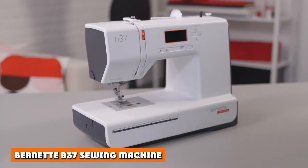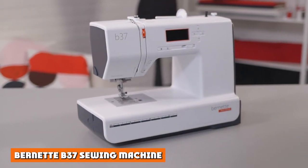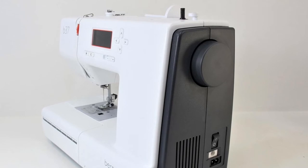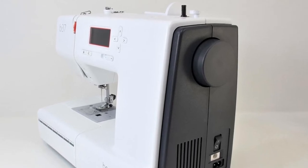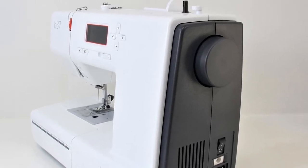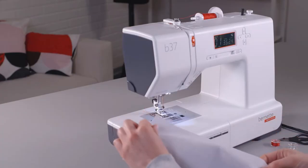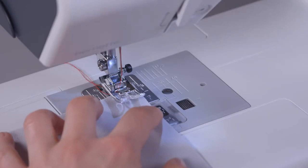The Bernett B37 sewing machine offers a basic aesthetic, but its looks can be deceiving. The exterior is almost entirely white, save for the back side which is black. The needle plate is made of stainless steel, while the inner workings are all metal.